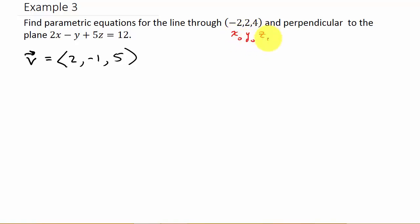Alright, so now we can see that we have x₀, y₀, z₀ and a, b, c. So our parametric equations are: x = x₀ + at, y = y₀ + bt, and z = z₀ + ct.